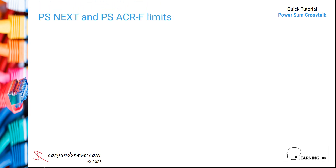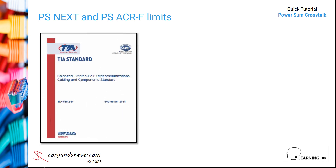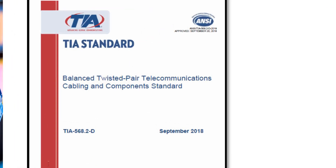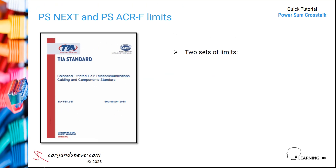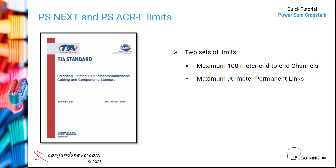We'll finish this module with a review of the published PS-NEXT and PS-ACRF limits for categories 5E, 6, 6A, and 8. The applicable standard is the Telecommunications Industry Association or TIA 568.2-D, titled Balanced Twisted Pair Telecommunications Cabling and Components Standard. There are two sets of limits: one for maximum 100 meter end-to-end channels and the other for maximum 90 meter permanent links. The channel limits are lower because of the cords added at both ends.